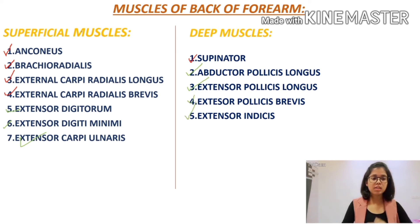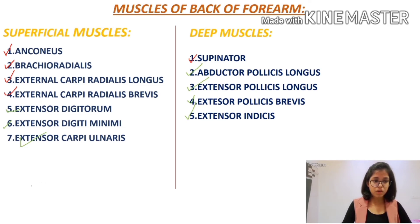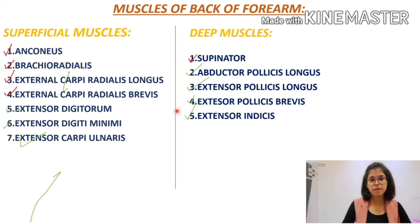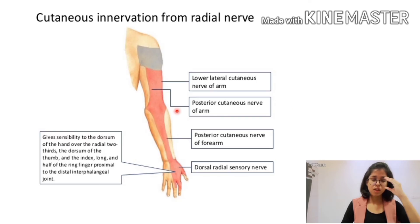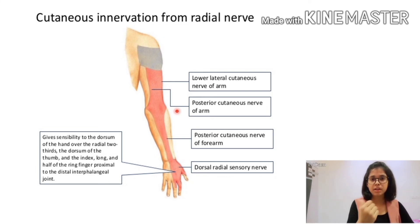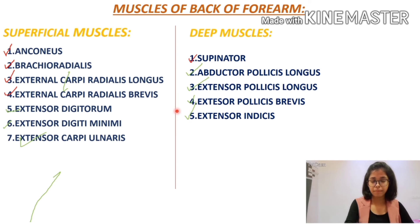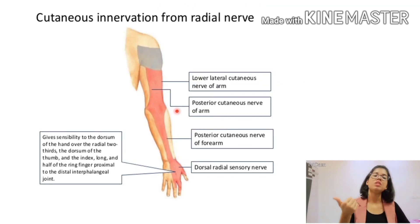To summarize the sequence: at the level of the radial sulcus, anconeus is supplied; after that, brachioradialis and extensor carpi radialis longus are supplied; after that, in the cubital fossa, extensor carpi radialis brevis and supinator are supplied; after that, the deep division supplies the rest of the extensor muscles of the forearm.